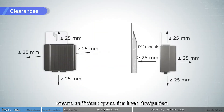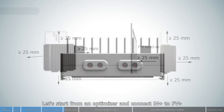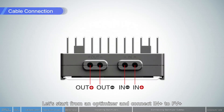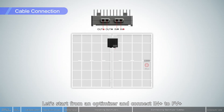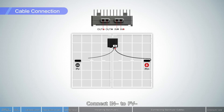Ensure sufficient space for heat dissipation. Starting from an optimizer, connect N positive to PV positive and connect N negative to PV negative.